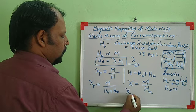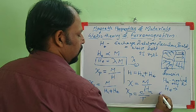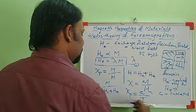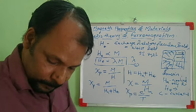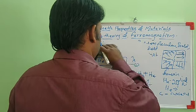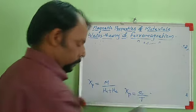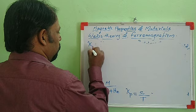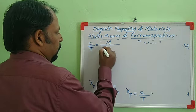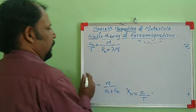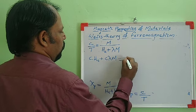Paramagnetic susceptibility χ_P is inversely proportional to absolute temperature, or χ_P = C/T, where C is the Curie constant and T is absolute temperature. Substituting χ_P = C/T and H_E = λM, we get C/T = M / (H_A + λM). Cross-multiplying gives C·H_A + C·λM = T·M.